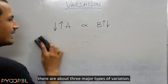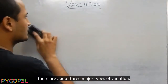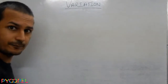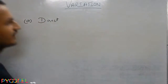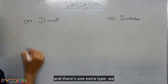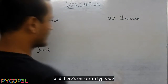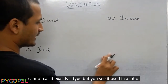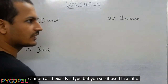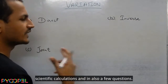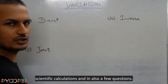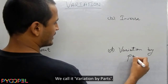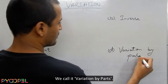Now, there are about three major types of variation. And there is one extra type — we cannot exactly call it a type, but you will see it used in a lot of scientific calculations and in a few questions — we call it variation by parts.